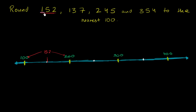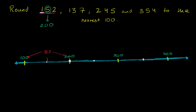If we're rounding to the nearest 100, we want to look at one place to the right of that — we want to look at the tens place to decide which multiple of 100 it is closer to. The rules are: if the tens digit is 5 or larger, we round up. The tens digit here is 5 or larger, so we round up to 200. This makes sense — 152 is 48 away from 200 and 52 away from 100, so it's closer to 200.